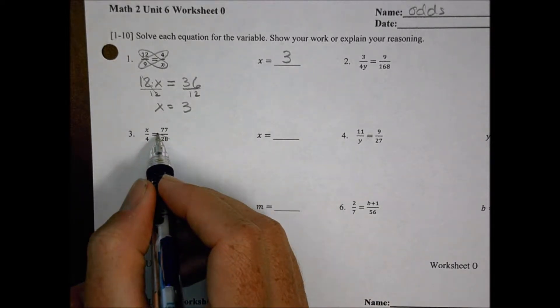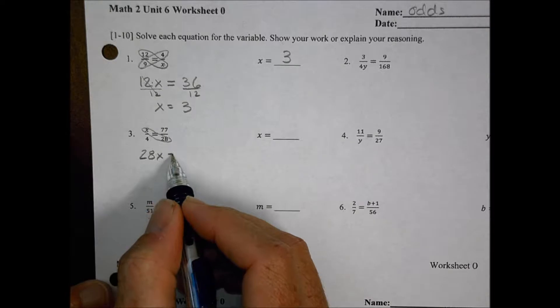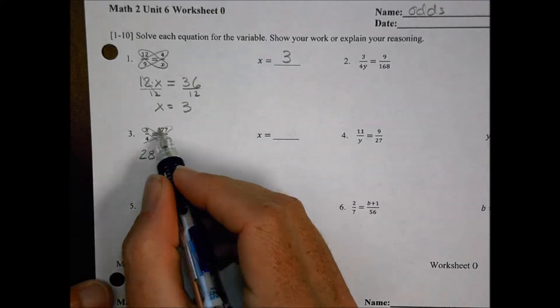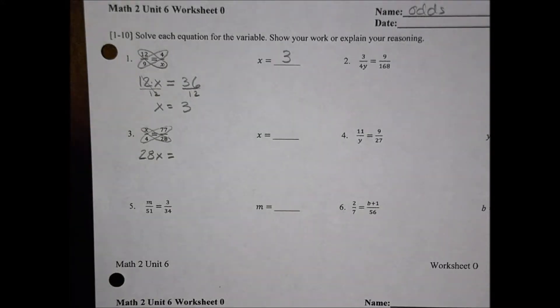On number 3, we have again cross-multiplying x times 28 becomes 28x, and set that equal to this side over here, which is 77 times 4. Now, 77 times 4 probably is just not rolling off your tongue there. So, we could take a look at it and say, well, let's just go ahead and do 77 times 4.